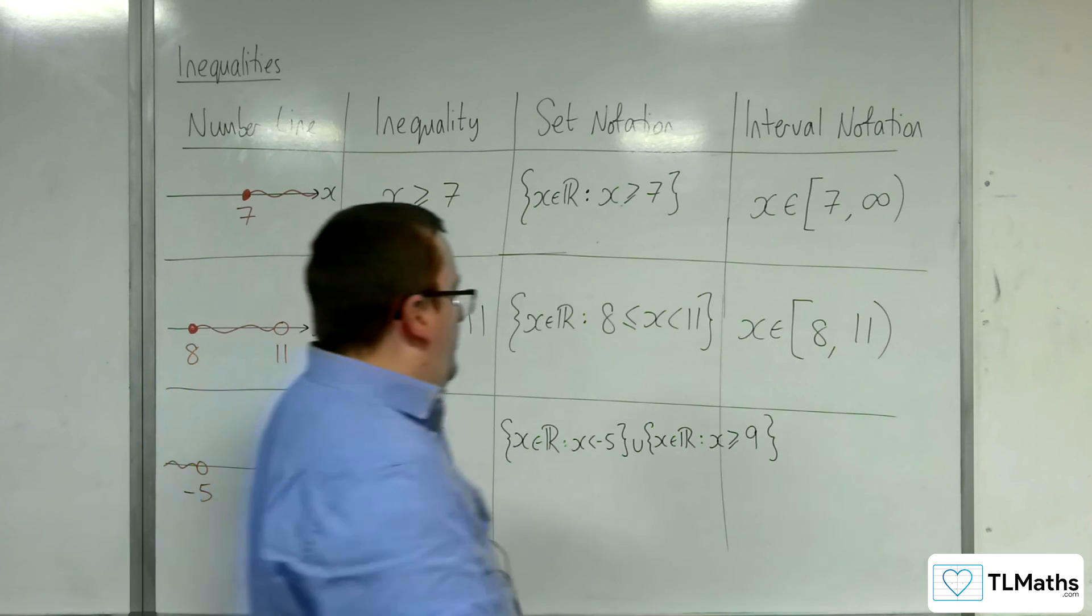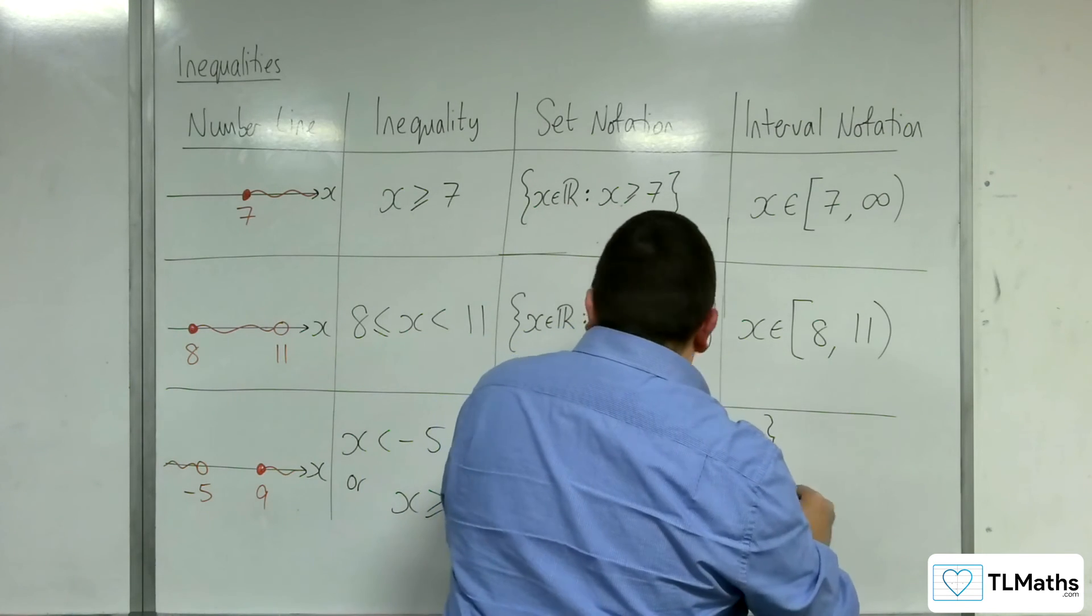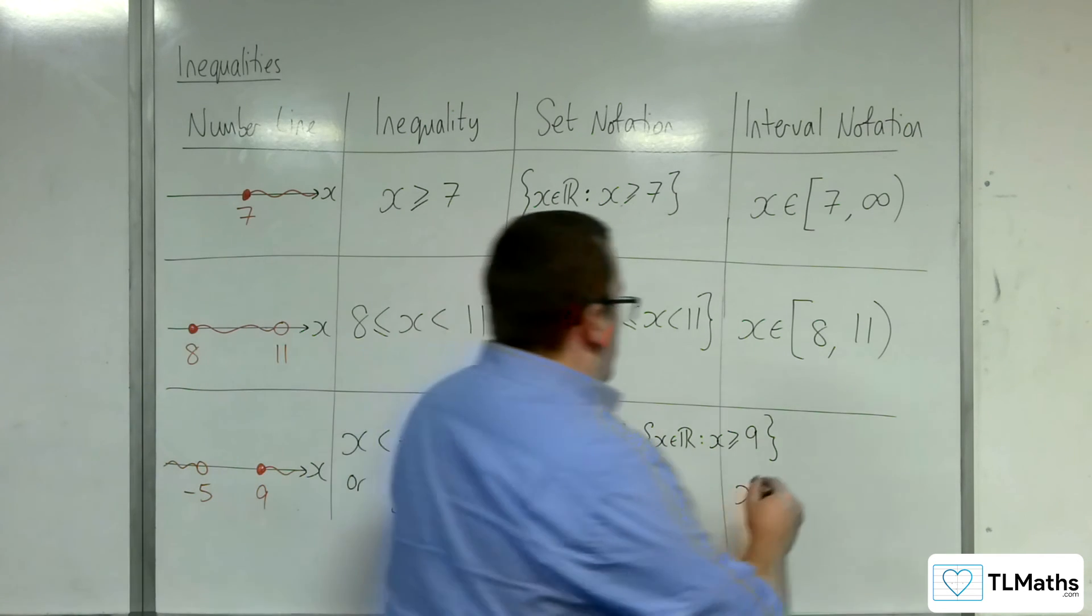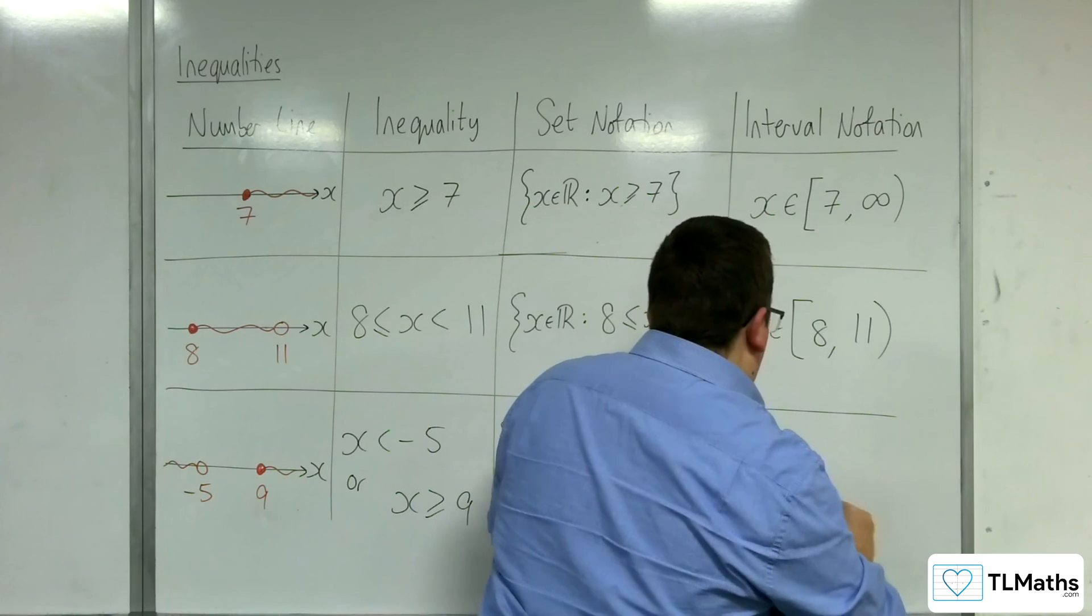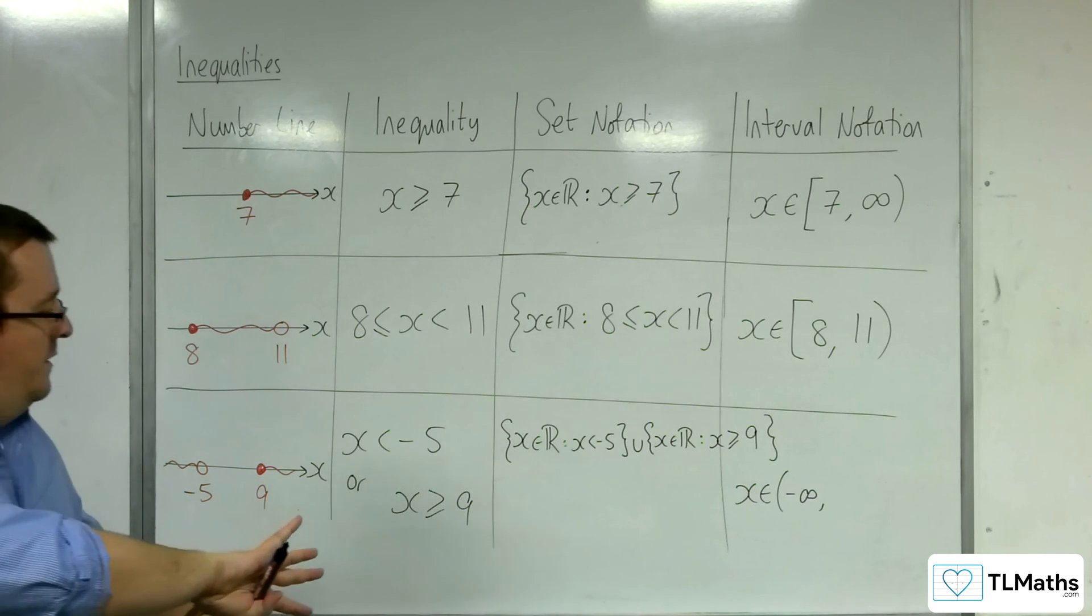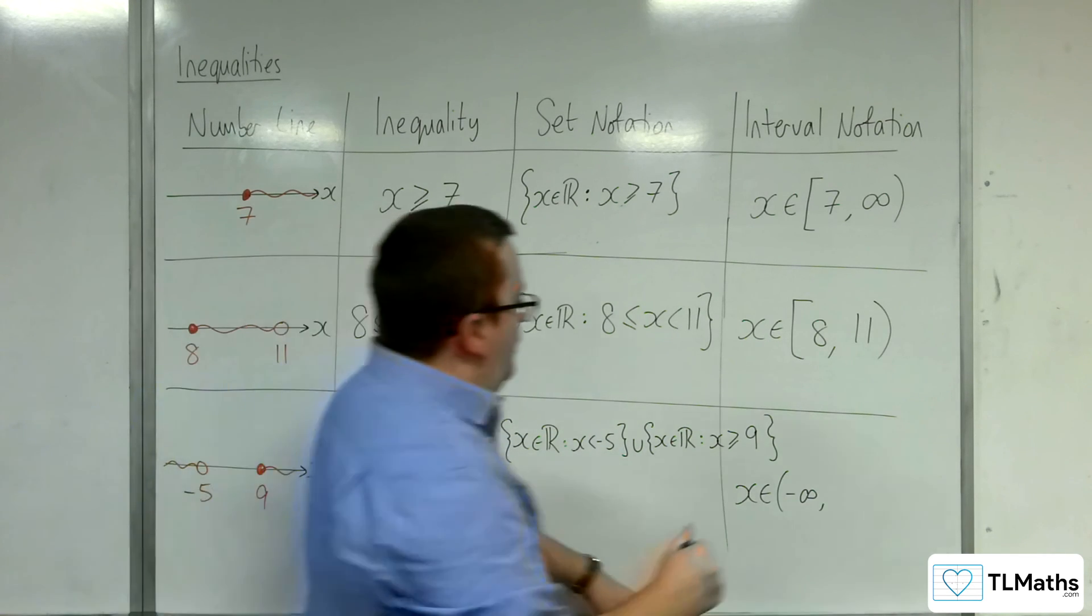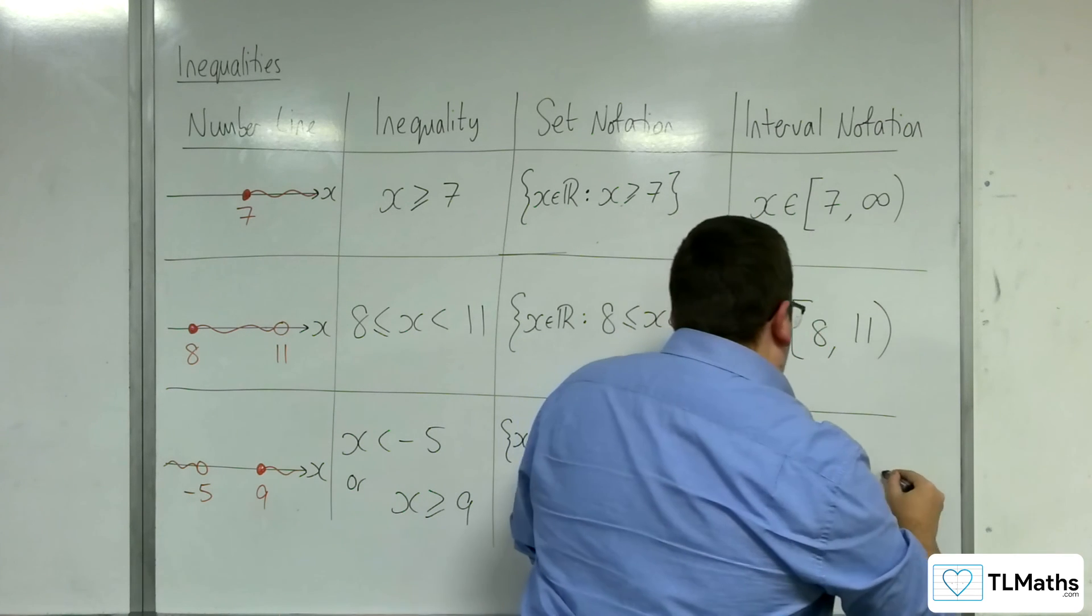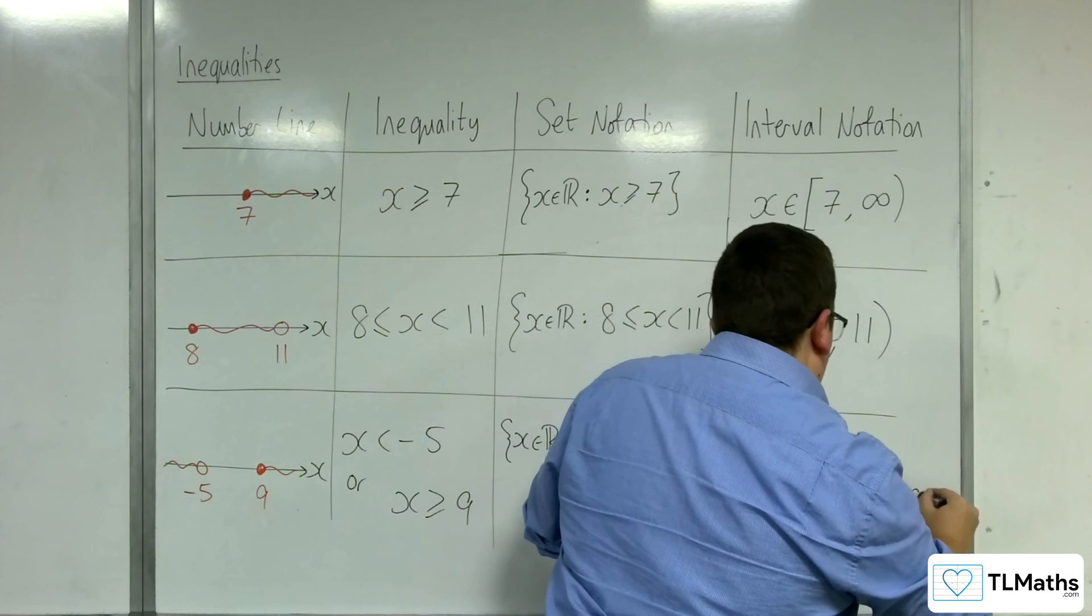Then for interval notation, we would have, less than minus 5, so minus infinity in a rounded bracket, because we're not including infinity. Minus 5 in a curved bracket. Union, we're including 9, and then going up to infinity.